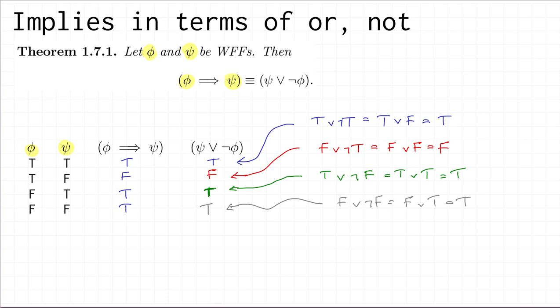If we just look at those last two columns, those two columns are the same. So the two well-formed formulas have the same truth value under every truth assignment, and that means by definition they are logically equivalent.